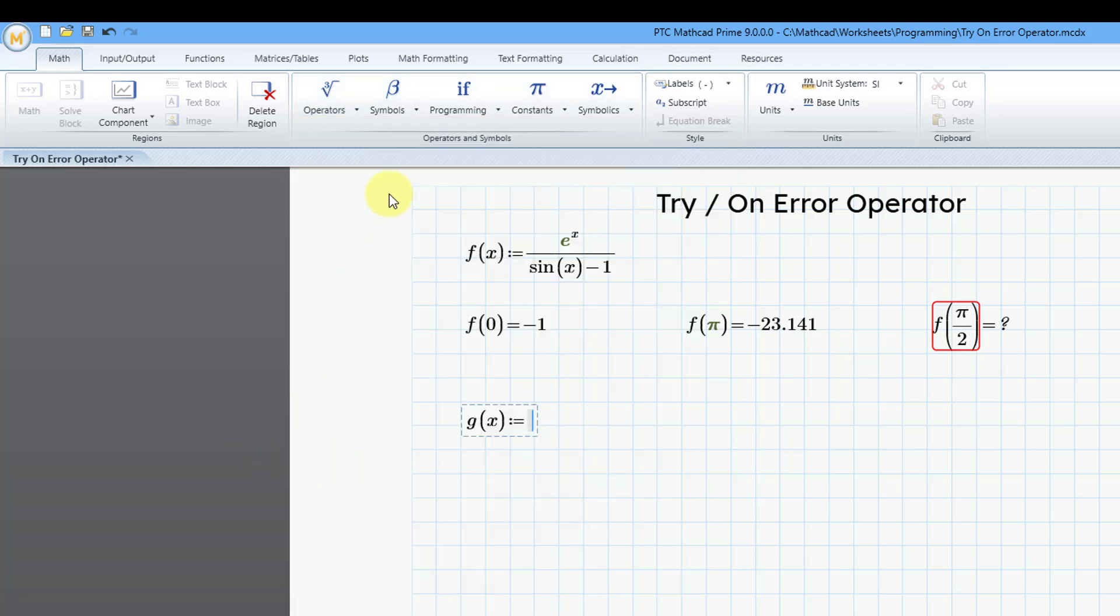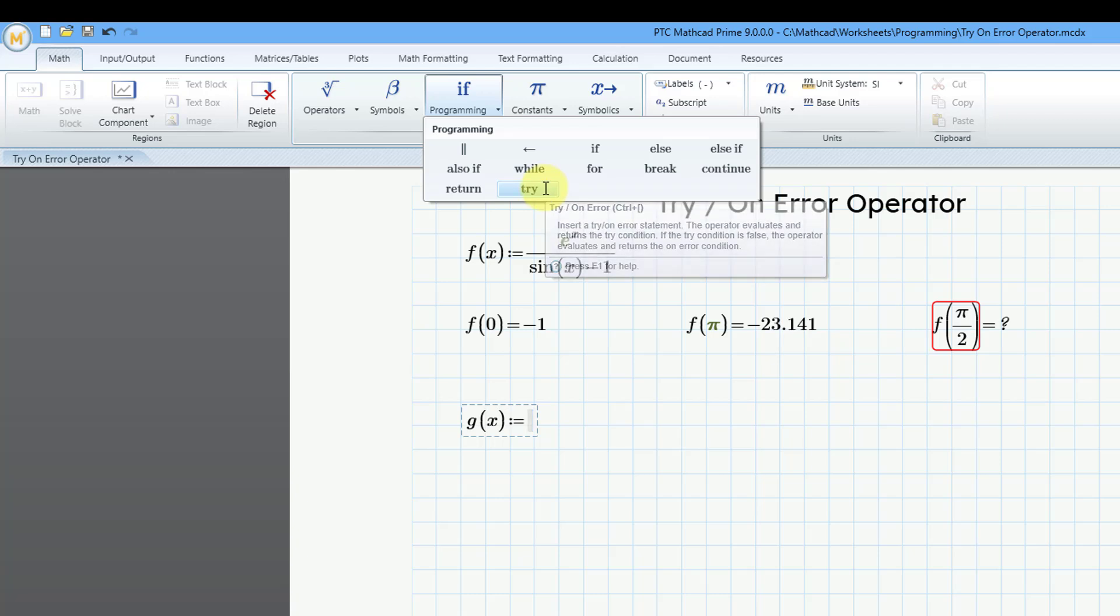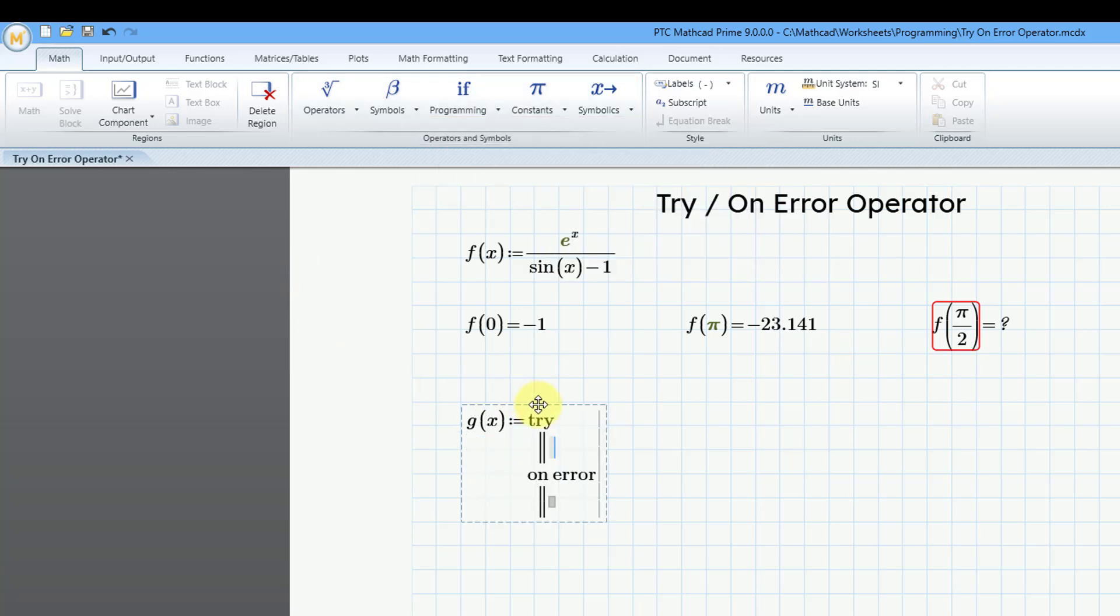To use the try operator, you go to the programming drop down. The try operator is used a lot in programs, but you can use it directly in a function. Let's choose try. And when I click on that, it automatically adds in the text for try and on error and gives you the two different areas where you can specify what you want to do.